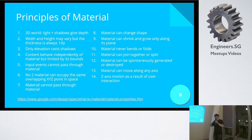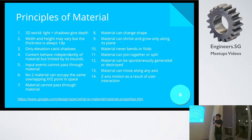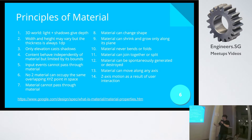As with the real world, we don't have two things occupying the same xyz space. Material cannot pass through another material — if you take two pieces of paper, they don't go through each other. Material can change shape, can shrink, grow, band, fold, join together, or split. They can be simultaneously generated or destroyed. Material can move along any axis, and z-axis motion is a result of user interaction.